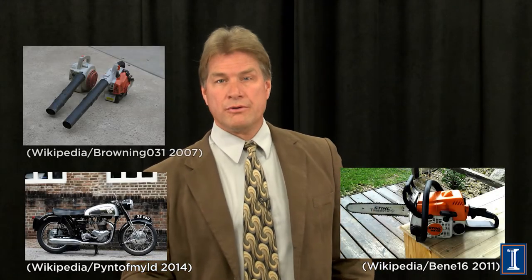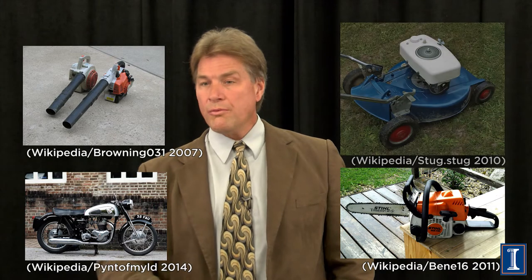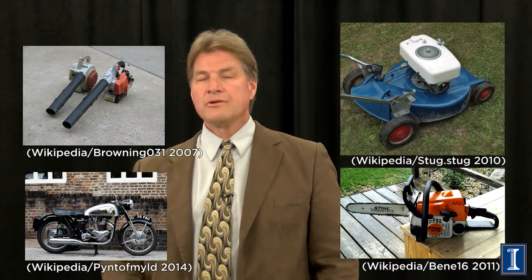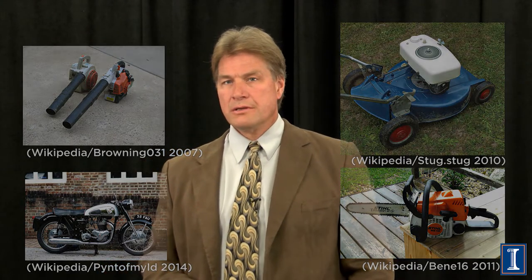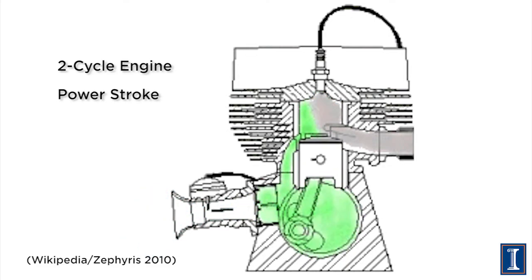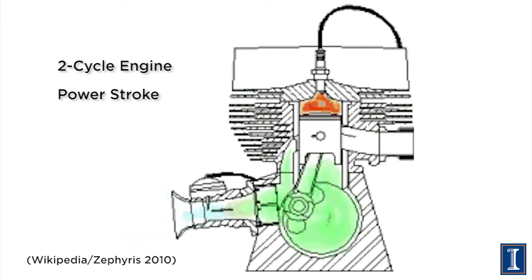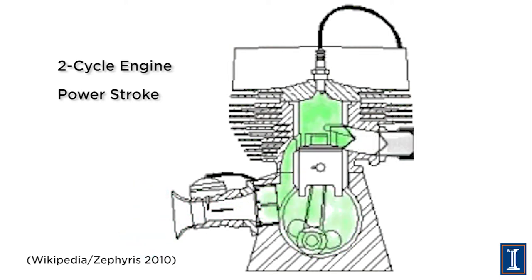I should mention the two-cycle engine. Motorcycles, chainsaws, leaf blowers, and small portable engines you can carry around are two-cycle engines. They basically have a power stroke and a compression stroke.